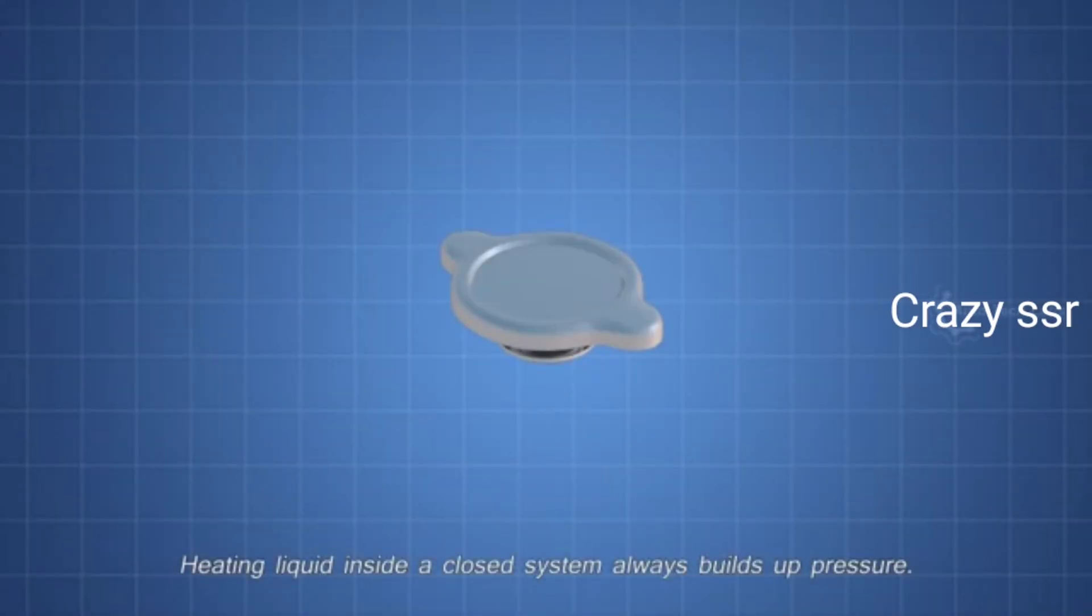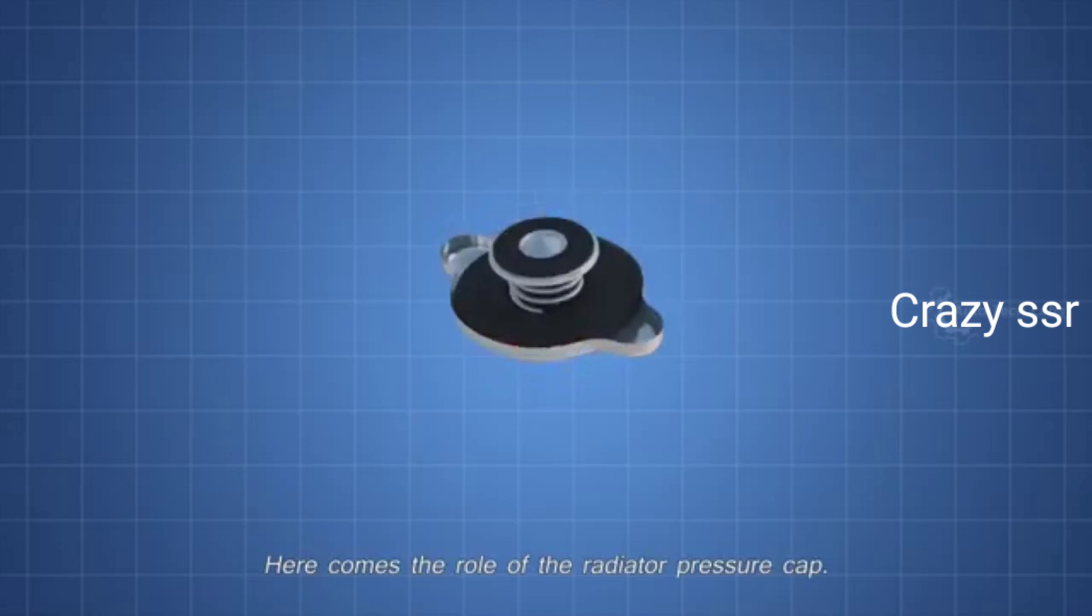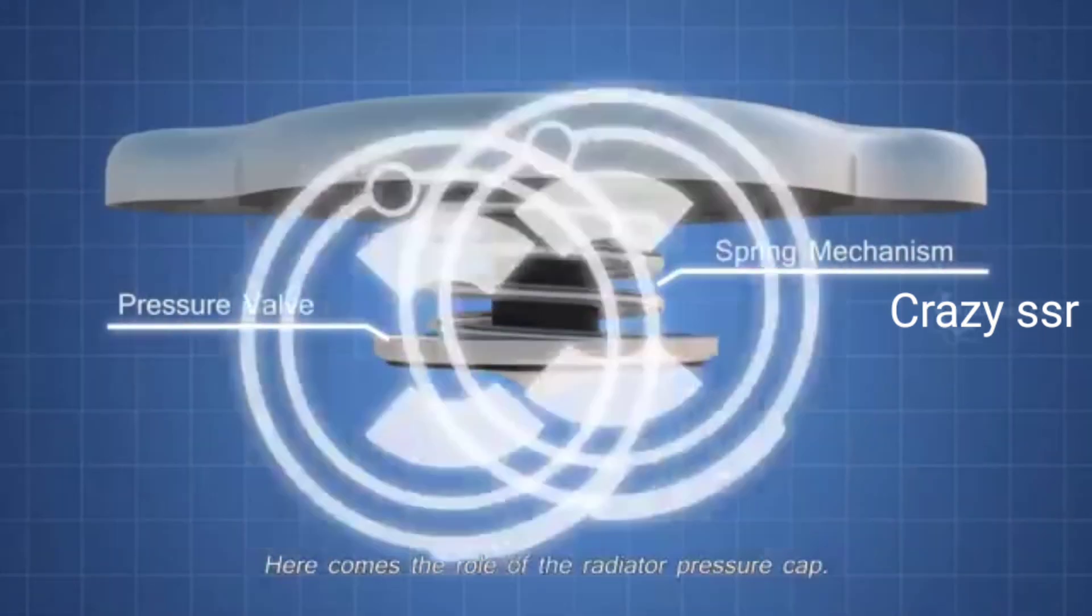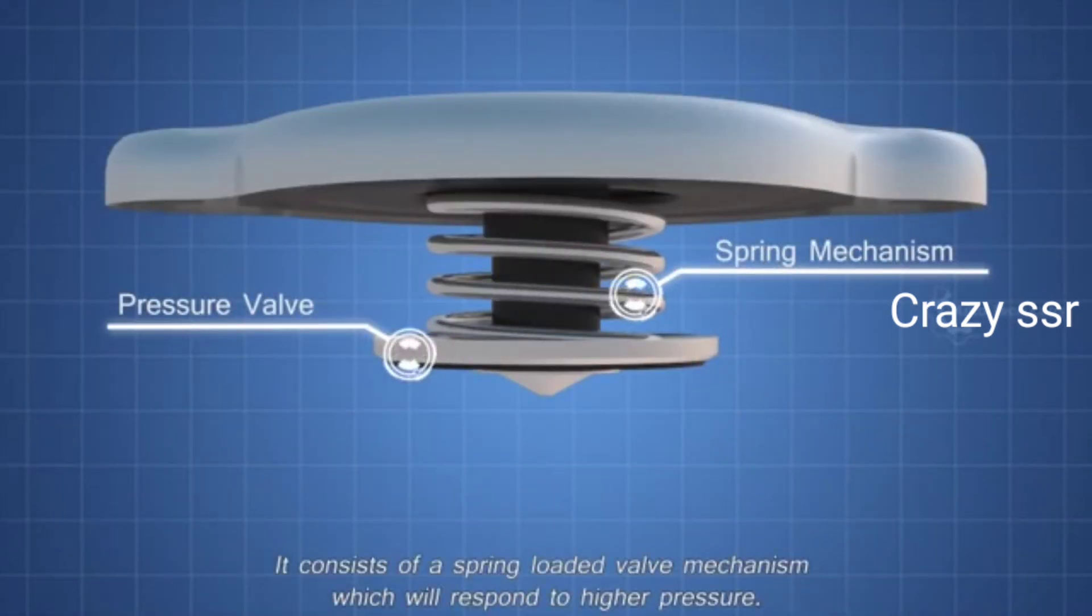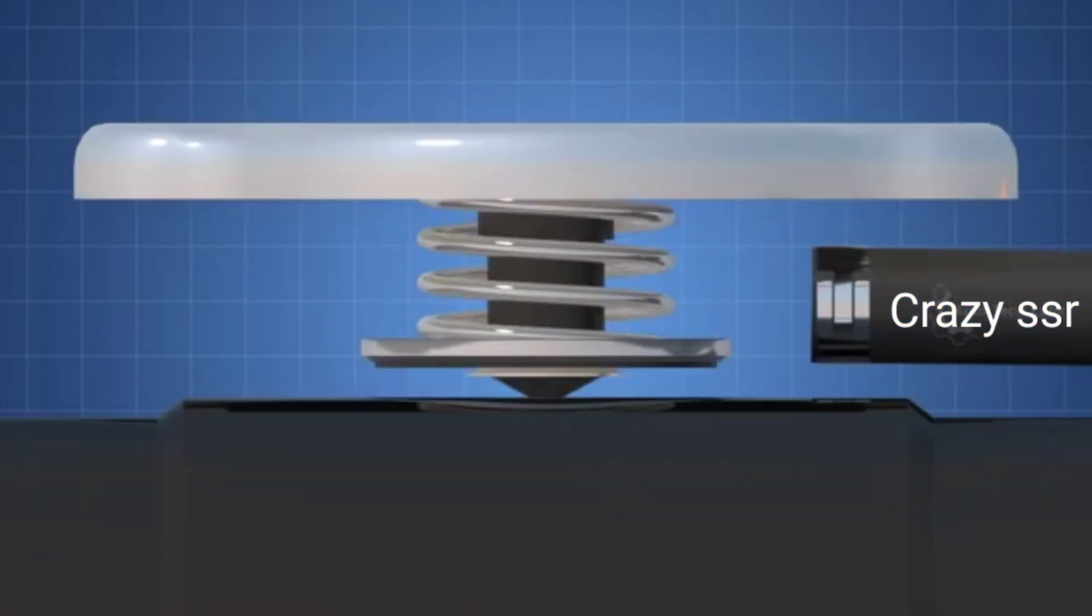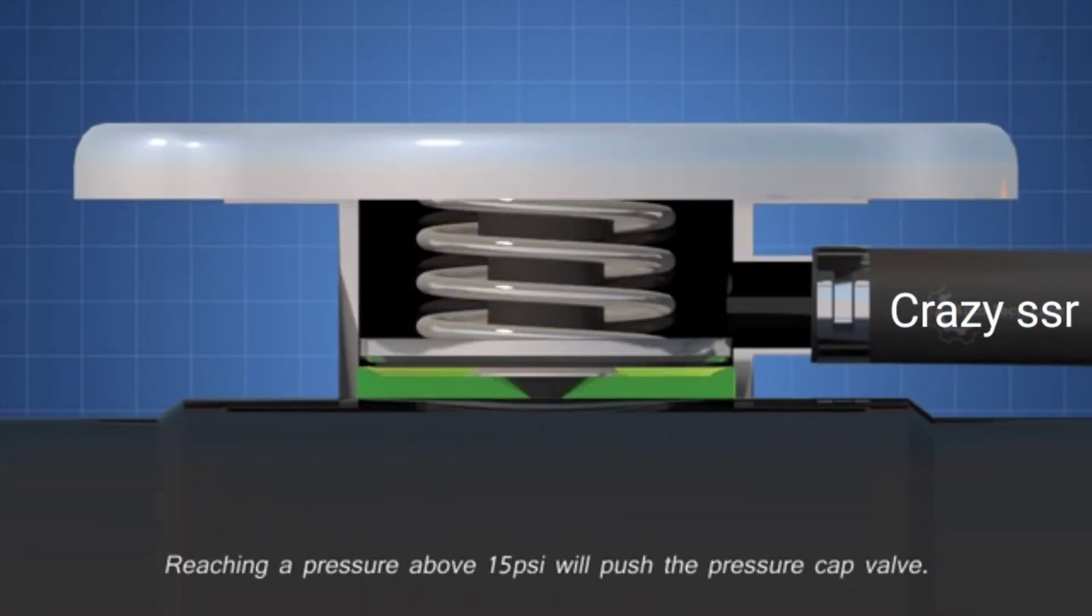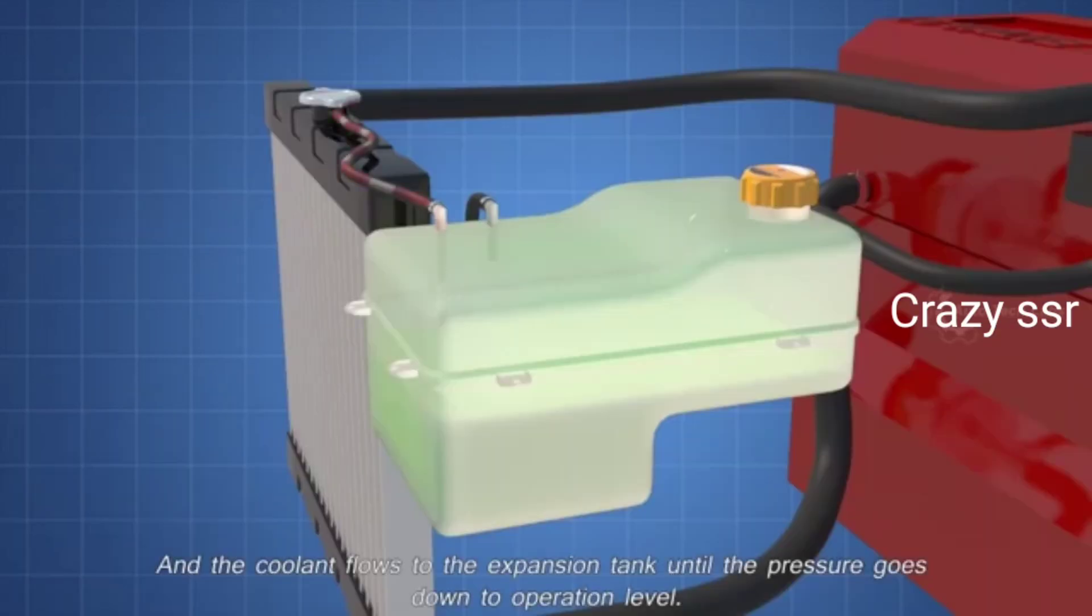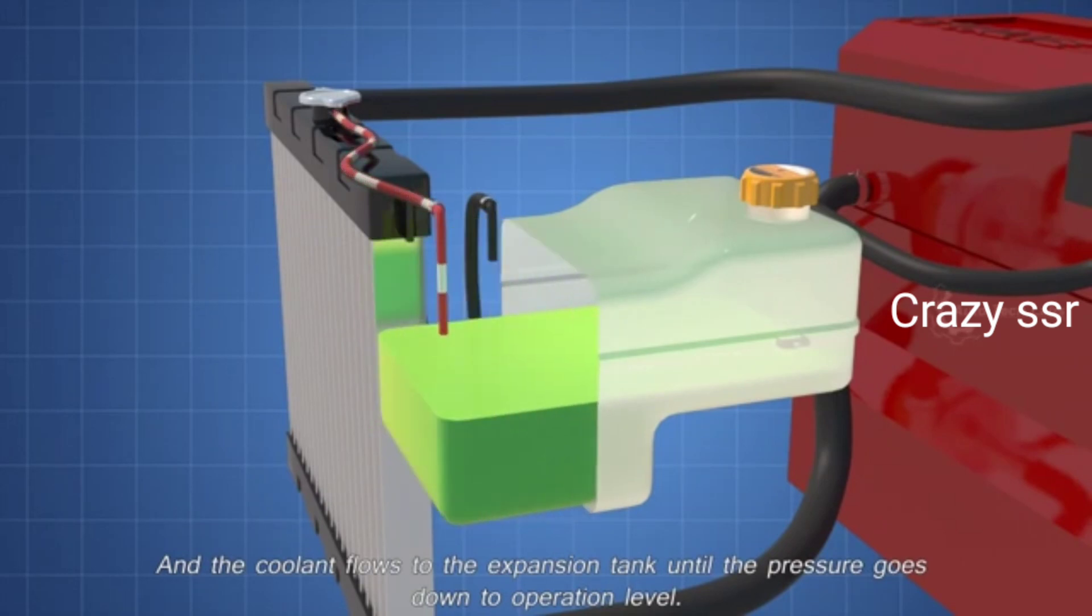Heating liquid inside a closed system always builds up pressure. So how to maintain the pressure? Here comes the role of the radiator pressure cap. It consists of a spring-loaded valve mechanism which will respond to higher pressure. Reaching a pressure above 15 psi will push the pressure cap valve, and the coolant flows to the expansion tank until the pressure goes down to operation level.